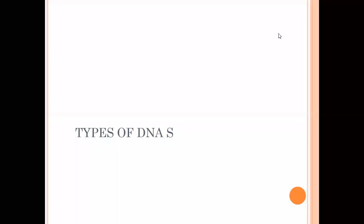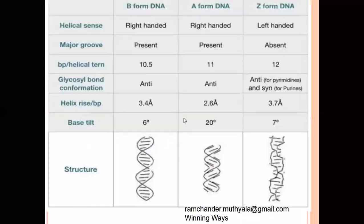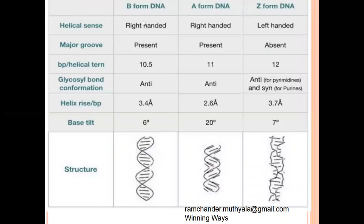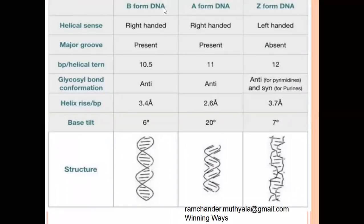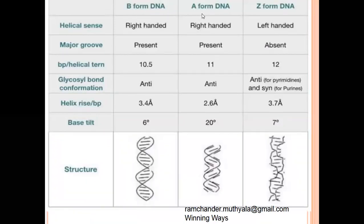There are mainly three types of DNA present in our cells. They are B-DNA, A-DNA, and Z-DNA.